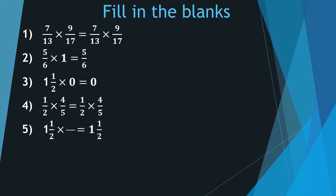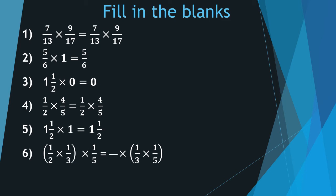Question 5: 1 1 upon 2 multiply by dash is equal to 1 1 upon 2. Any fraction number multiplied by 1 gives the fraction number itself, so the answer is 1. Question 6: 1 upon 2 multiply (1 upon 3 multiply 1 upon 5) is equal to dash multiply (1 upon 3 multiply 1 upon 5) — the answer is 1 upon 2. Question 7: dash multiply by 1 is equal to 15 upon 28. Any fraction multiplied by 1 gives the fraction itself, so the answer is 15 upon 28.